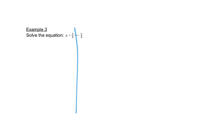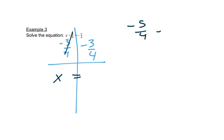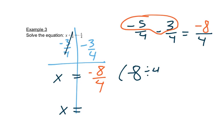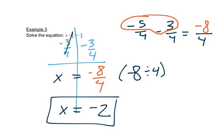This is an equation, but it works the same way. We have plus three fourths, so we want to subtract three fourths on both sides. That leaves x by itself on the left. On the right we have negative five fourths minus three fourths — those have common denominators, so the answer still has a four on the bottom. Negative five minus three is negative eight, giving us negative eight fourths. We can reduce: negative eight divided by four is negative two. Or divide both numerator and denominator by four to get negative two over one, which is also negative two.